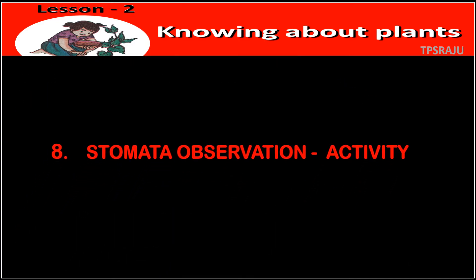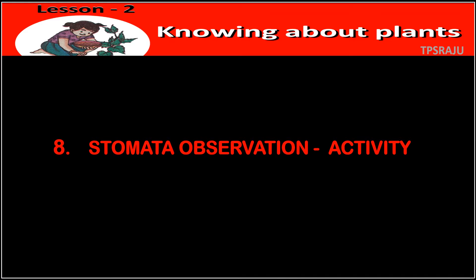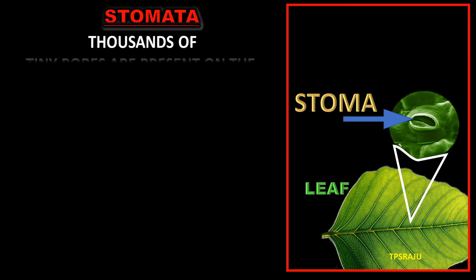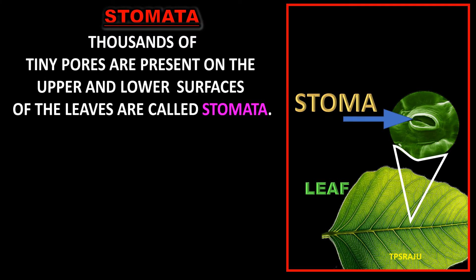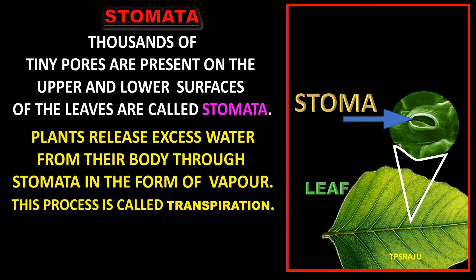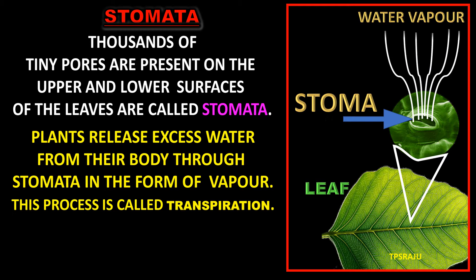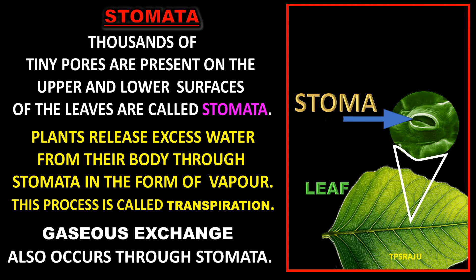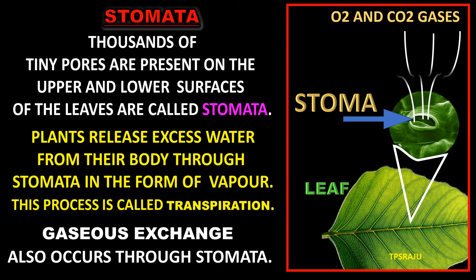Before going to observe stomata in a leaf, first we have to know: what are stomata? Thousands of tiny pores present on the upper and lower surfaces of the leaves are called stomata. Plants release excess water from their body through stomata in the form of vapor — this process is called transpiration. Gaseous exchange also occurs through stomata. So, stomata facilitate transpiration and gaseous exchange.